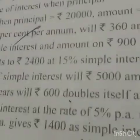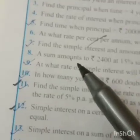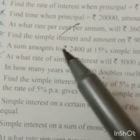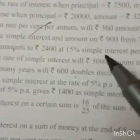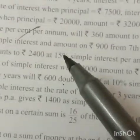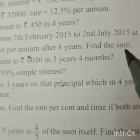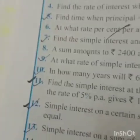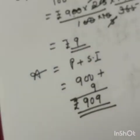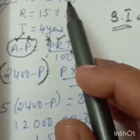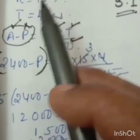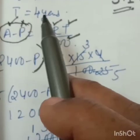Exercise 10, Question 8: sum — amount equals 2400, rate 15%, time 4 years. Find the sum.